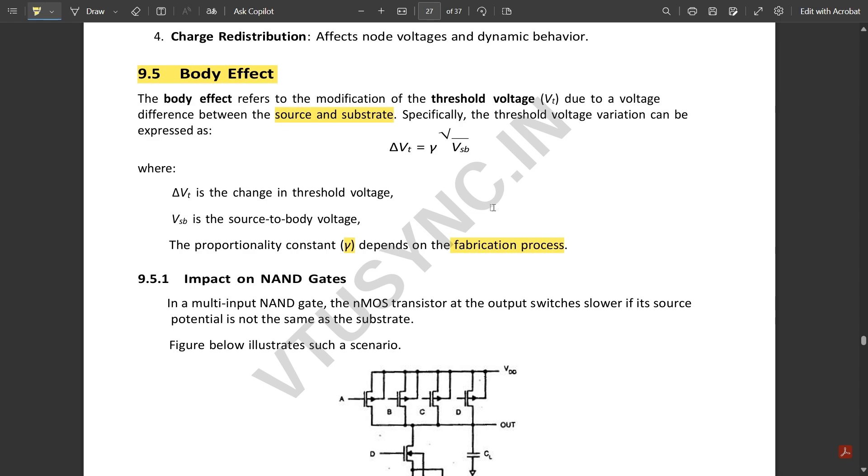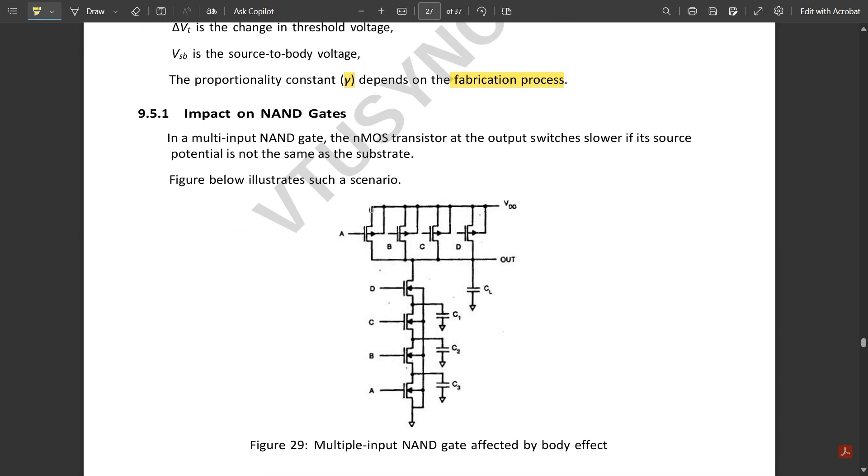Let us see the impact of this body effect in NAND gates. In a multi-input NAND gate, if you consider a four input NAND gate, the nMOS transistor at the output switches slower if its source potential is not the same as the substrate. The figure below illustrates such a scenario.